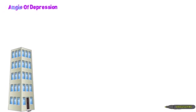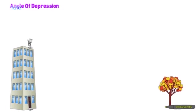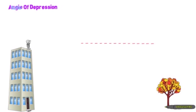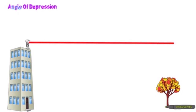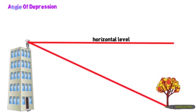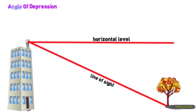Now let's see what is meant by the angle of depression. Consider a building with a boy standing on top of it. This gives his horizontal level. The boy is looking at the base of a tree, and that imaginary line is the line of sight. These two lines make a particular angle, and that angle is called the angle of depression.